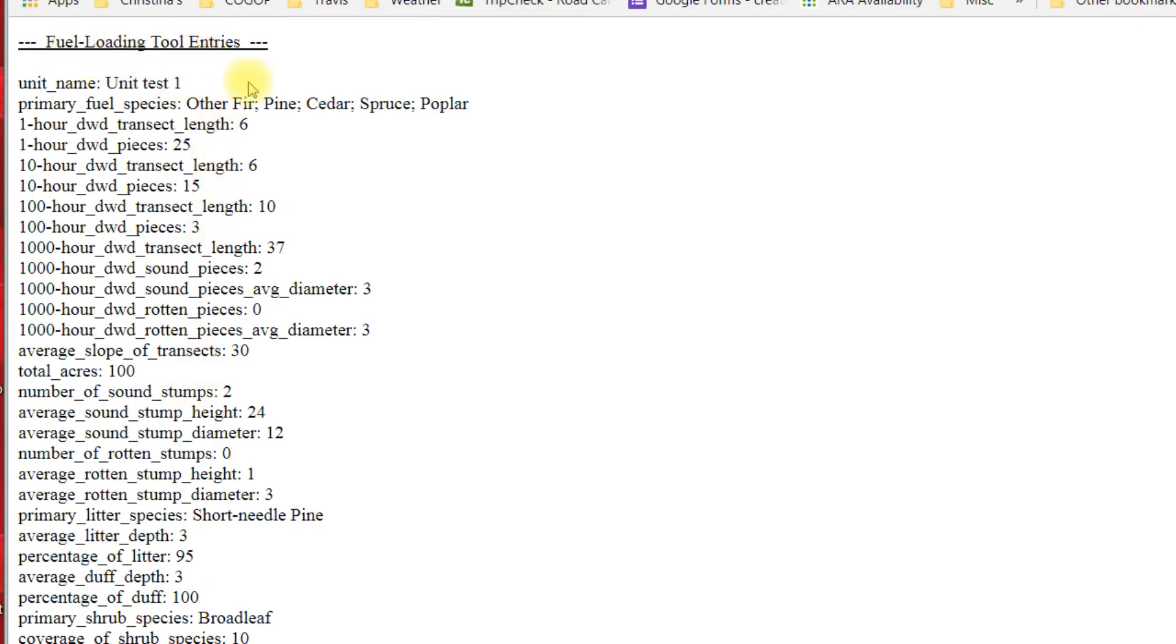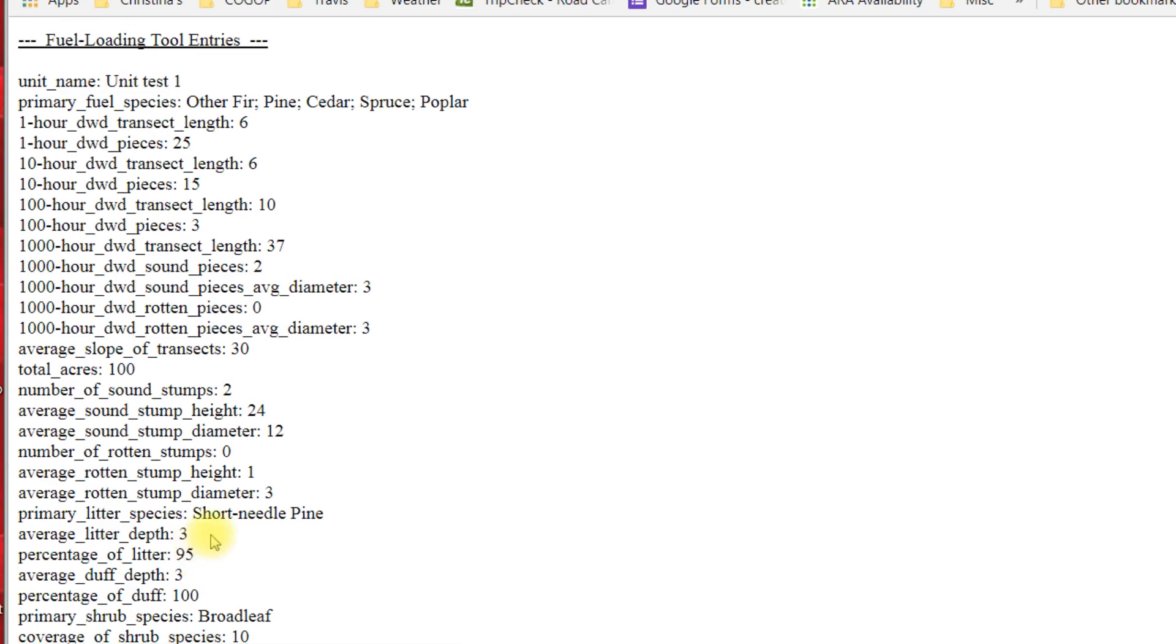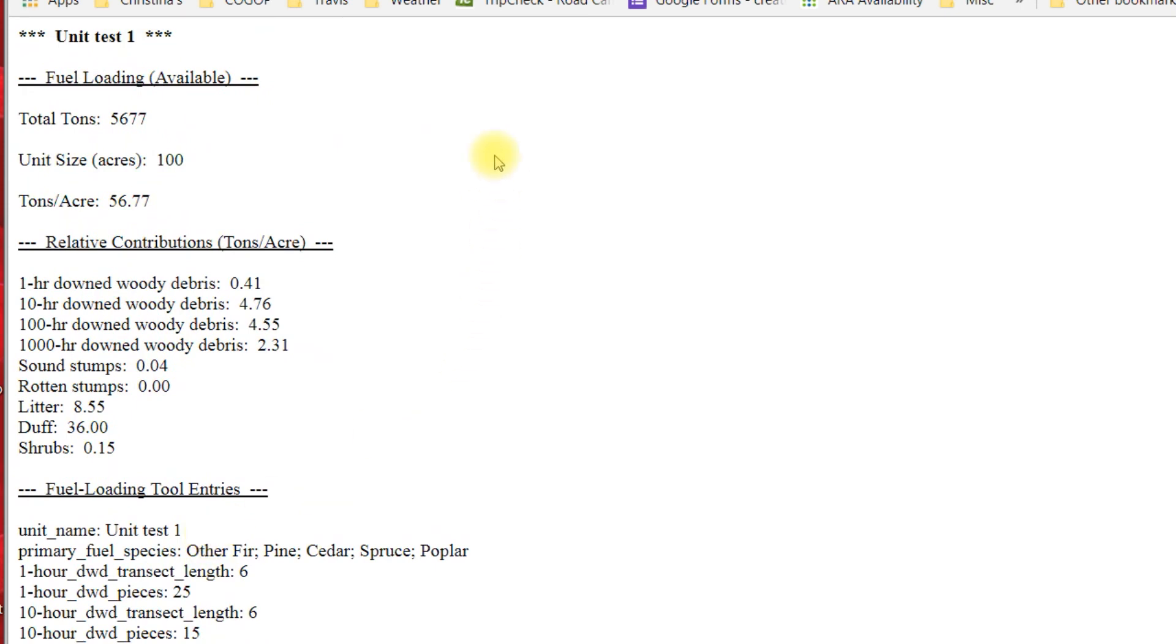And then the bottom part here re-summarizes what you entered in case you're like, what did I put in for these things? You can go back down, check your numbers. I'm like, oh, I didn't mean to put down 95% litter. I meant to put down whatever the number was. So, yeah, again, this is coming out soon as we develop it and continue to vet it. Feel free to experiment with it. It is functional. You can get your available tonnage. Just keep in mind that it currently is showing total available. And there's a few little different equations or how we're coming up with the numbers that we're still working on.